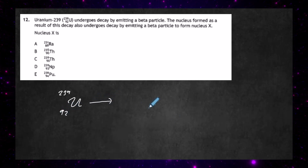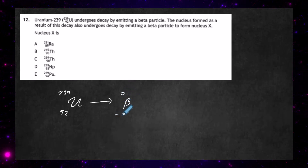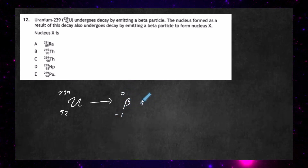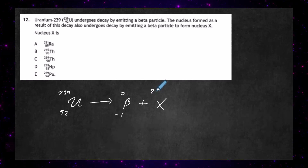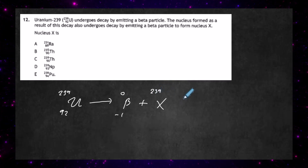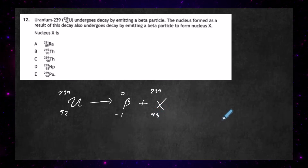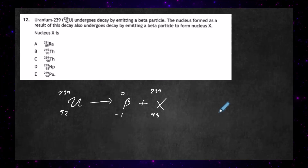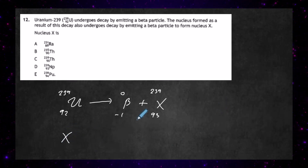Uranium-239 (atomic number 92) undergoes beta emission. A beta particle is zero, minus one. To balance, the mass number is unchanged, but the atomic number increases by one. So we get a new nucleus: mass number 239, atomic number 93. We don't know what that element is yet, but we move to the next stage.